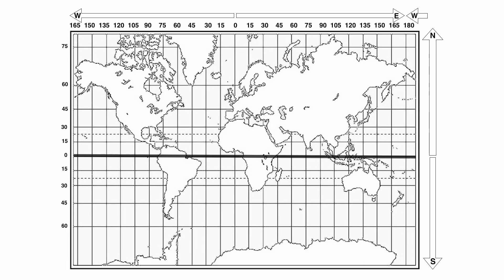The first thing you should do is identify the equator, the prime meridian, and the international date line. Once you do that, you can go through and plot your points. I also want to show you some of the other main latitude lines as well.